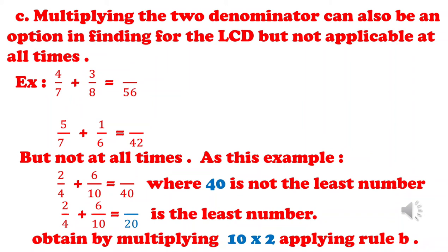Using the safer method on 2 over 4 plus 2 over 6: looking at the bigger denominator, which is 10, multiplying 10 times 2 gives us 20 for the first trial. Now 20 can be divided by 4, so there is no need to increase the multiplier. We have 20 as our LCD. So it is not always that we multiply the two denominators — it is safer to start multiplying by 2, 3, 4, 5, and so on, until we find a number divisible by the other denominator.